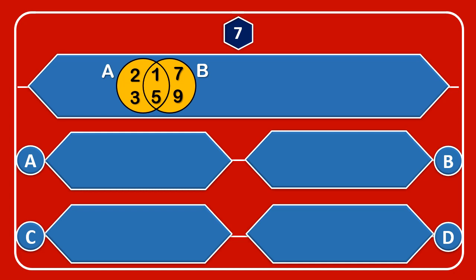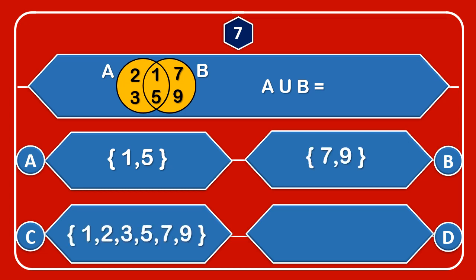Question number 7: If A union B is equal to A union B, then — A: set of {1, 5}, B: set of {7, 9}, C: set of {1, 2, 3, 5, 7, 9}.